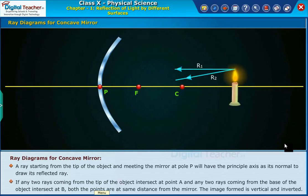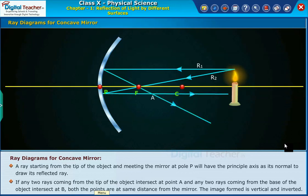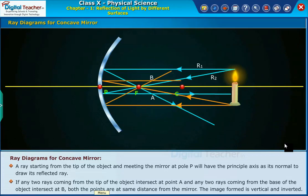If any two rays coming from the tip of the object intersect at point A and any two rays coming from the base of the object intersect at B, both points are at the same distance from the mirror. The image formed is vertical and inverted.